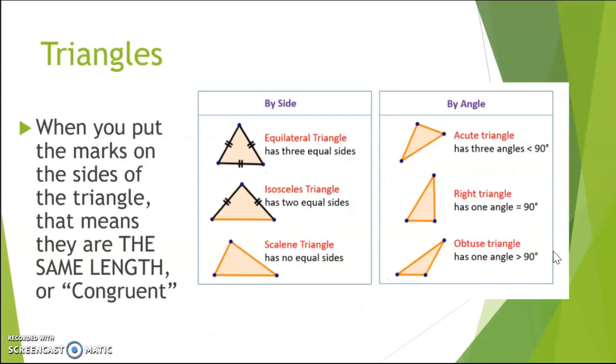What about different types of triangles? We hope that you've heard of these before. We've got the ones that are named by their side lengths. So equilateral triangles have all three sides the same. Isosceles have two sides the same. And scalene has no sides the same, which means every side is a different length.